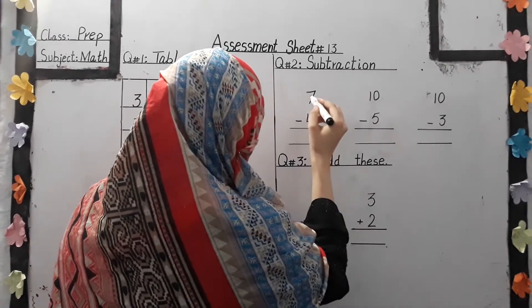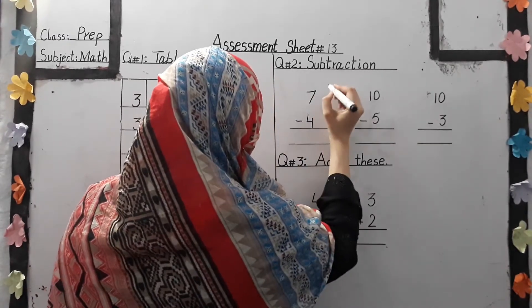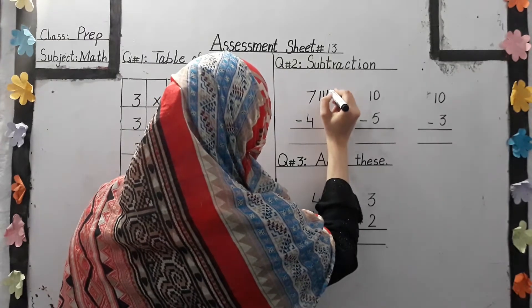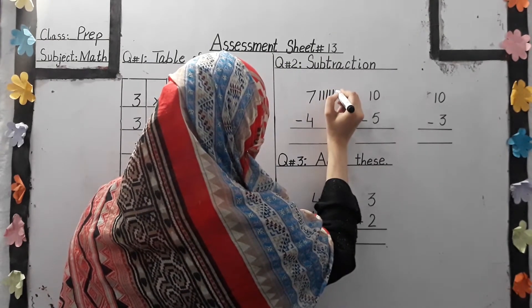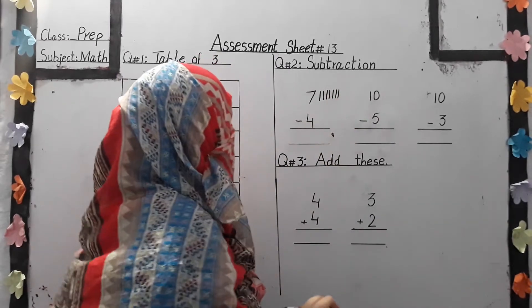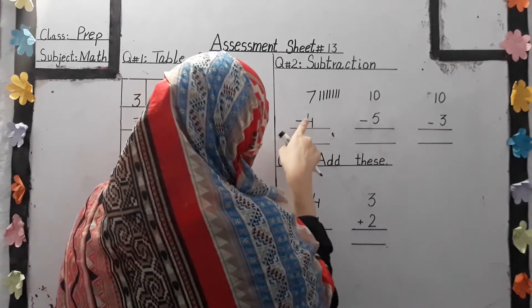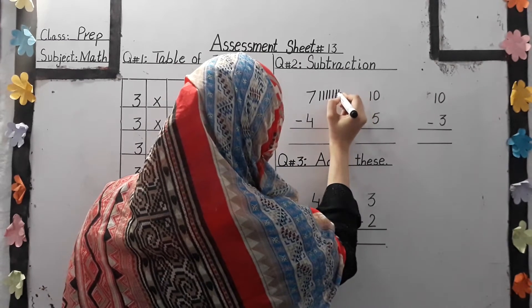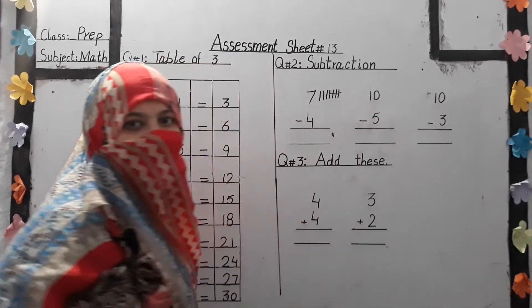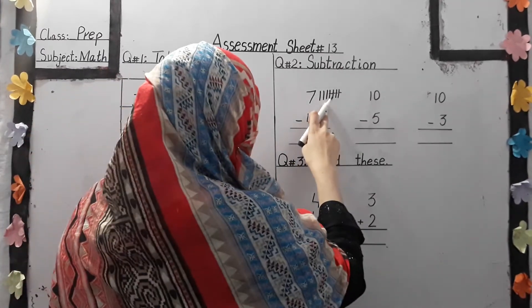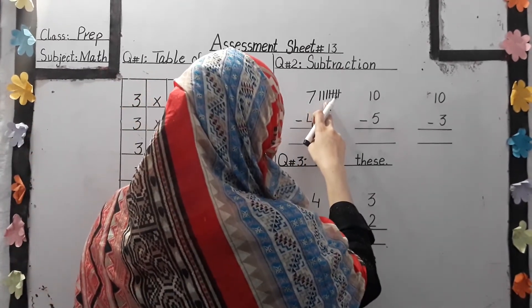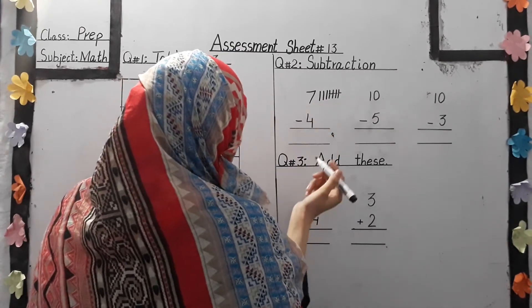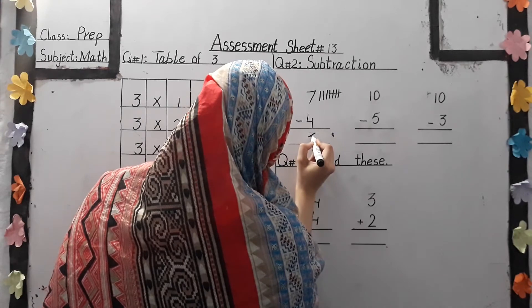Let's see our first question. 7 is our first number. We draw 7 lines: 1, 2, 3, 4, 5, 6, 7. Ok, students. Another number is 4. So we cut 4 lines: 1, 2, 3, 4. Now we count the remaining: 1, 2, 3. So our answer is 3.